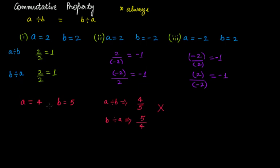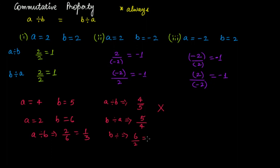For example, if a is 2 and b is 6, then a divided by b gives 2 divided by 6, which equals 1 by 3. But b divided by a gives 6 divided by 2, which equals 3. So you get 1/3 and 3 — these two are not equal. For any property to be true, it must always hold. Since division does not always give the same result, division does not follow the commutative property.